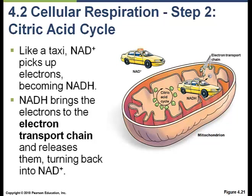To briefly review what we've accomplished so far: we took glucose and in glycolysis split it into two pyruvic acid molecules. We then took those pyruvic acid molecules and in the citric acid cycle extracted all the electrons from them. Those electrons were loaded into the taxi NAD+, which became NADH, and the electrons are now on their way to the electron transport chain.